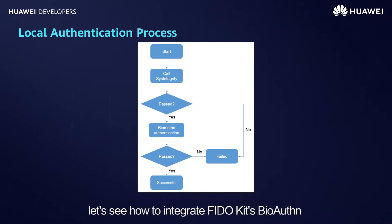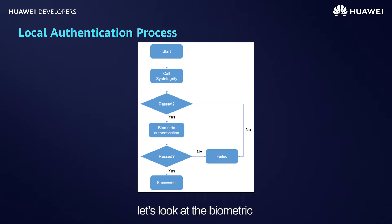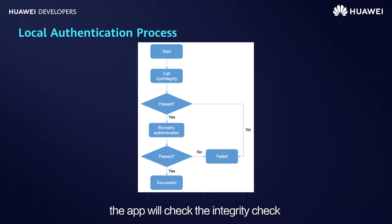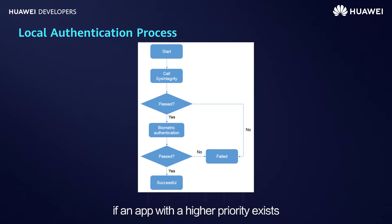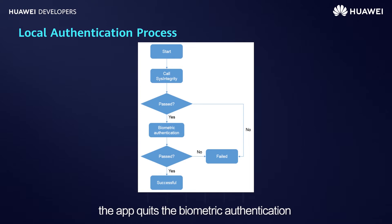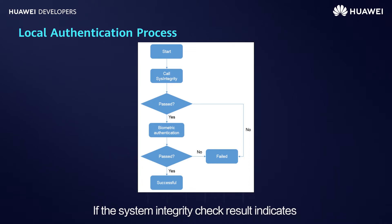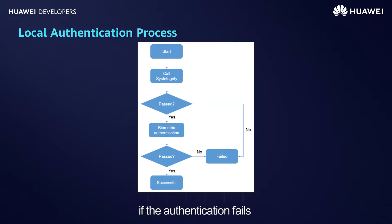Next, let's see how to integrate FiddleKit's BioAuthn into your app and implement the biometric authentication function. At the beginning of biometric authentication, the app checks the integrated check results of the operating system to see if an app with a higher priority exists. If so, the operating system is insecure. In this case, the app quits biometric authentication and displays a failure message. If the system integrated check result indicates the operating system is secure, the app continues biometric authentication.